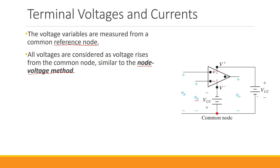When we want to supply power to the terminals, we use DC voltage sources. Since this is the positive power supply, the negative side of this power supply is connected to the common node and the positive side is connected to the positive power supply terminal. For the negative power supply, we connect the positive side of the power supply to the common node and the negative side to the negative power supply terminal.